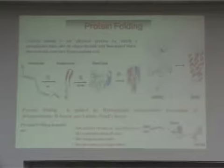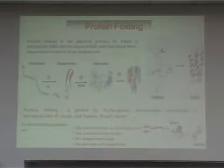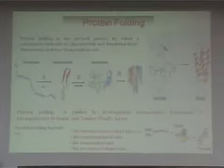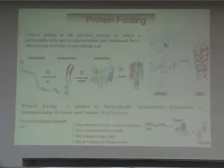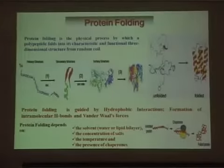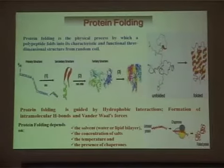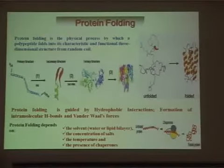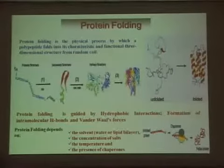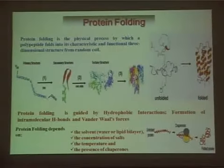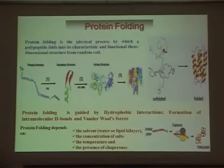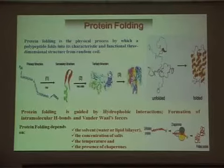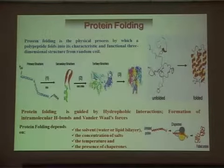Protein folding is a physical process by which a polypeptide folds into a characteristic three-dimensional structure from random coils. This protein folding involves the formation of secondary structure, normally the alpha helix and beta sheet type of structures. It then gets folded into the three-dimensional structure known as the tertiary structure. The quaternary structure involves the assembly of different subunits which are already folded.